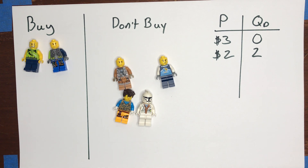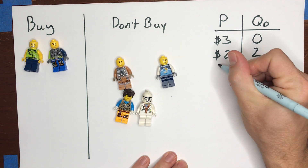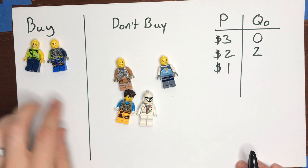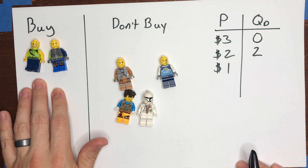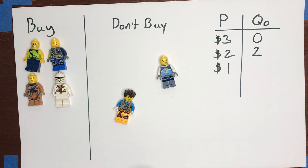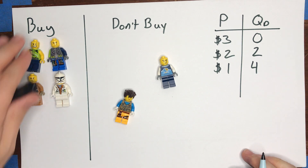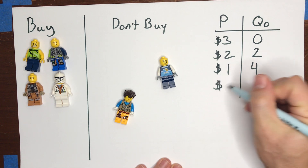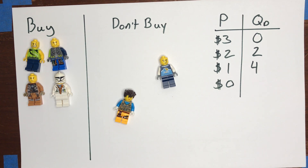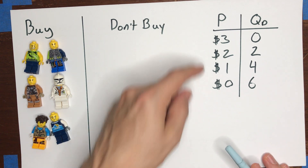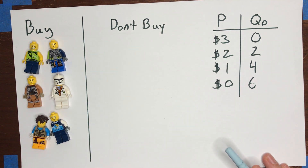Now let's cut the price to one dollar. We know those two consumers are still willing to buy — if they'd pay two dollars they'd definitely pay one dollar — so they stay in the buy column. Two more consumers also move over: they'd be willing to buy if you only charge them one dollar, so the quantity demanded at one dollar is four units. Then if we make it free — a price of zero — the remaining two consumers would also be willing to take one, giving us a total of six. So the quantities demanded are 0, 2, 4, and 6 as we lower the price from three dollars down to zero.